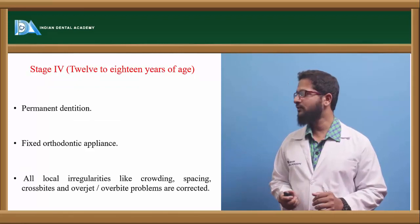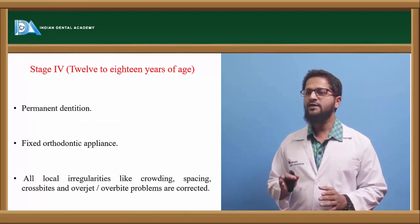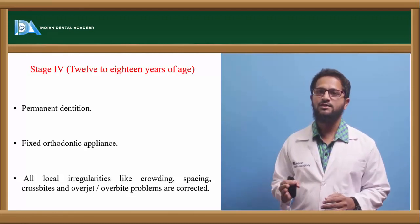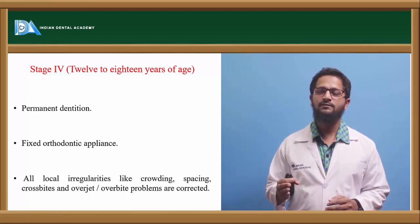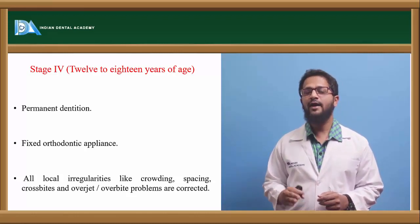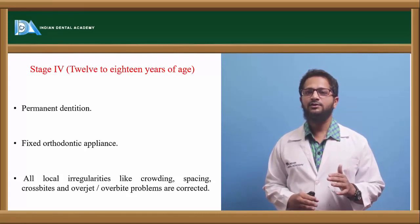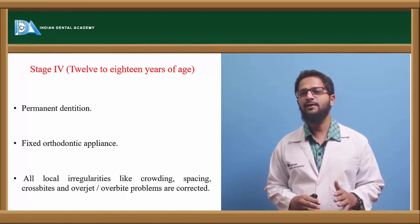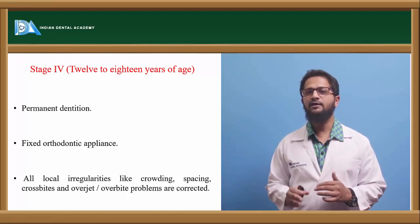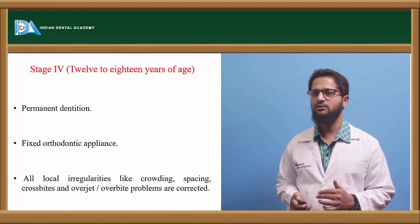Stage 4, from 12 to 18 years, is the permanent dentition stage requiring fixed orthodontic therapy. Crowding, spacing, rotations, and any intra-arch mal-relationships have to be corrected. If required, a surgical plan has to be made with proper diagnosis and evaluation of the case in all three planes of space — sagittal, transverse, and vertical — and any required surgeries must be planned and carried out at this stage of treatment.